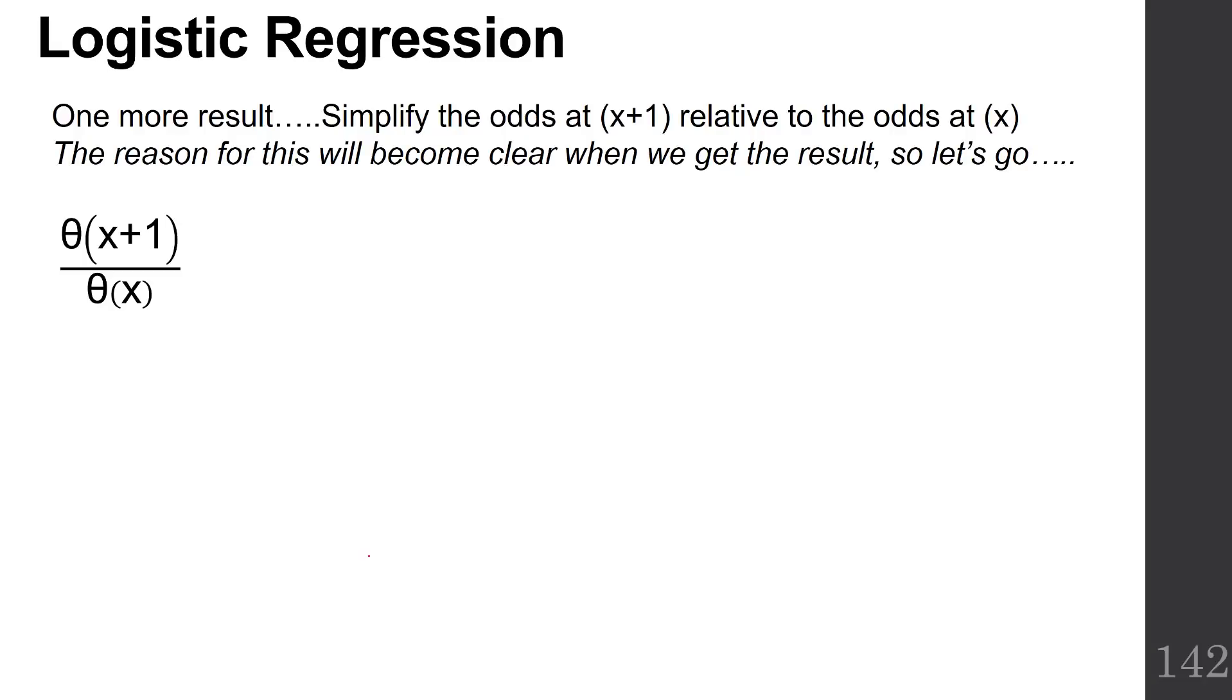That was a little bit of a calculation. Hold on with me for one more minute and let's do one more calculation. Let's simplify the odds at x plus 1 relative to the odds at x. So remember I'm using this theta to denote odds. So the odds at x plus 1 over the odds at x. So let's go ahead and simplify this.